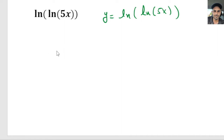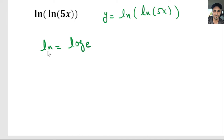Before we go ahead and do that, I'm going to write down a few things. The natural log is equal to a common log with base e. So if we use the log with base e, that is equal to the natural log, or ln. The other thing we have to know is the property of natural log: if you have e to the ln of some number, that is equal to that number.